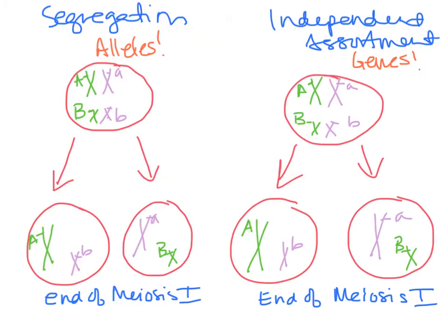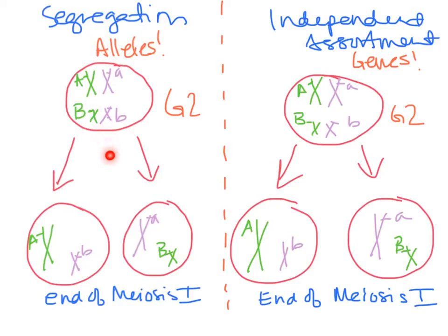Let's take a look at an example. We see two representations of gametes being formed. This is really what it would look like at the end of G2. During the process of meiosis I, we'd have prophase I, and if things are lined up in the middle, it would be metaphase I. One of each homologous pair goes to one cell, and the other of each homologous pair goes to the other.